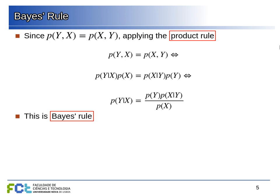Since the joint probability of X and Y is the same regardless of order, we can write the joint probability of Y and X as the conditional probability of Y given X multiplied by the marginal probability of X, and likewise from the other side. This gives us Bayes rule: the conditional probability of Y given X equals the marginal probability of Y multiplied by the conditional probability of X given Y, divided by the probability of X. Bayes rule relates the two conditional probabilities looking from different directions.